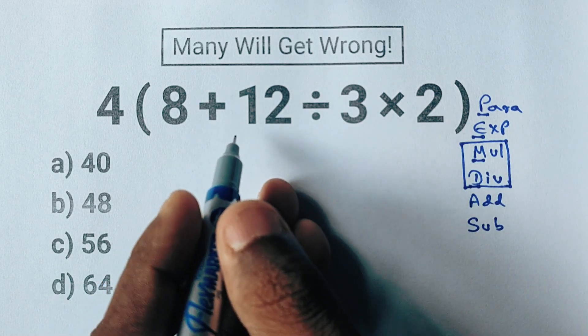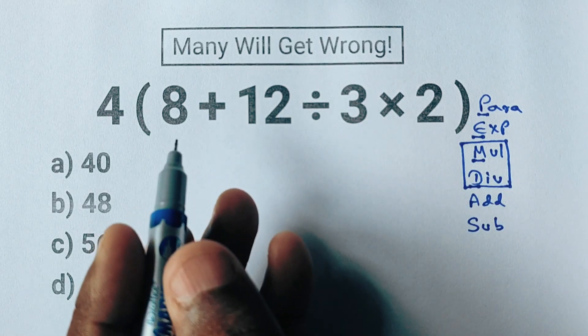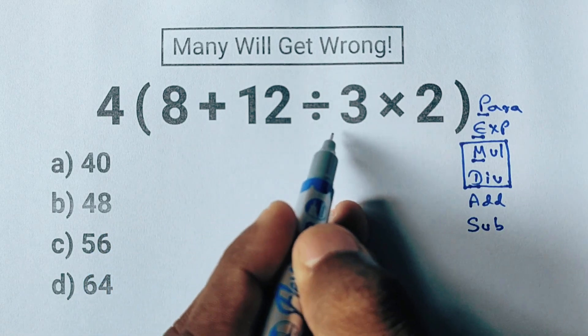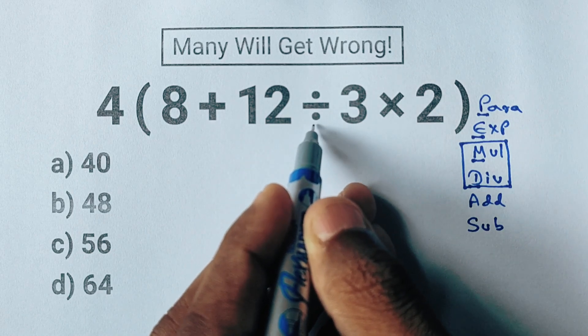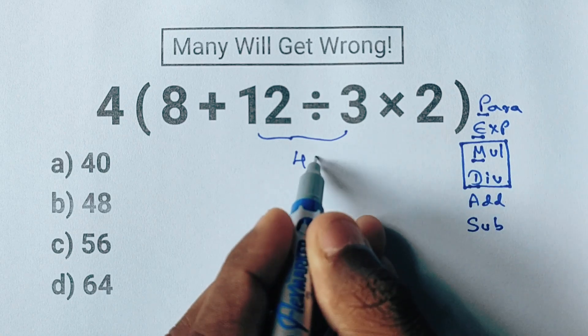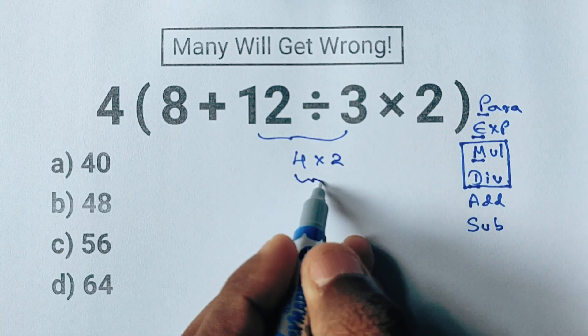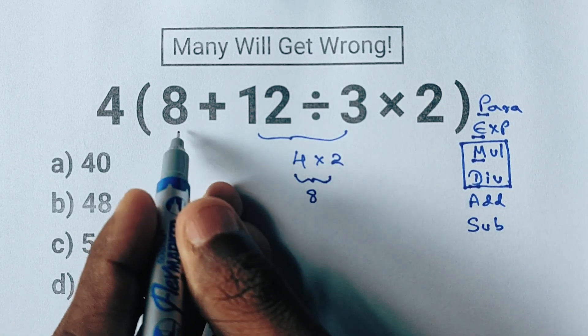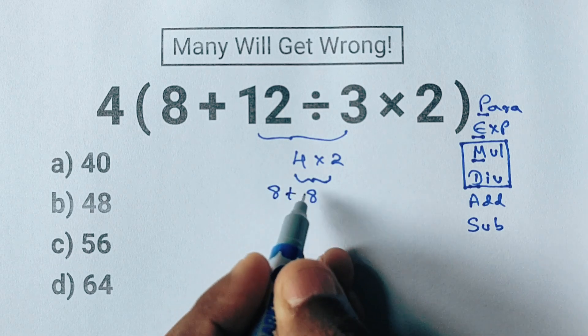Inside the parenthesis we see 12 ÷ 3 first, which equals 4. Then we do 4 × 2, which gives us 8. Now the expression inside becomes 8 + 8, and that equals 16.